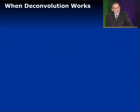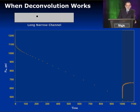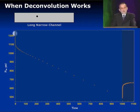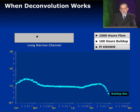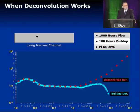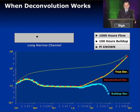Let me show you when deconvolution works and when it doesn't. For a long, narrow reservoir with 1,000 hours of flow and 100 hours of buildup with a known initial pressure, conventional buildup analysis gives a limited type curve. When we take the buildup data and deconvolve it, the result shows a half-slope representing linear flow and boundary-dominated flow representing a finite reservoir — which matches the true answer shown by the yellow line. The deconvolution has done a wonderful job and is much more useful than the conventional buildup type curve.